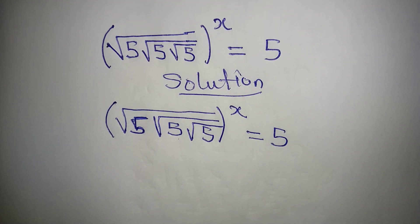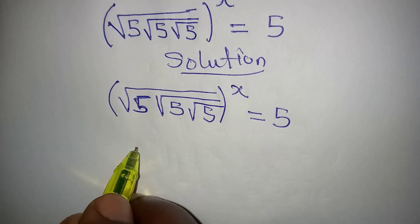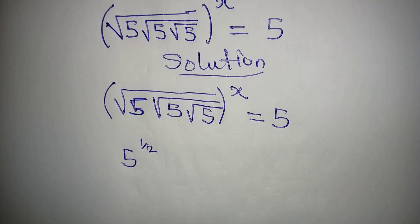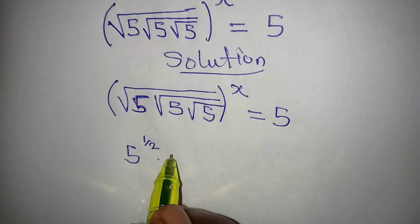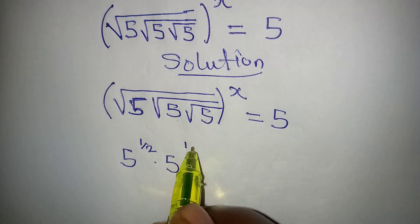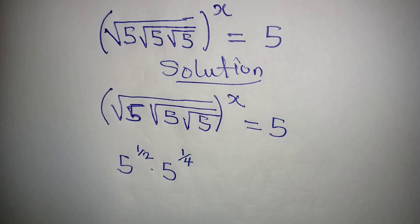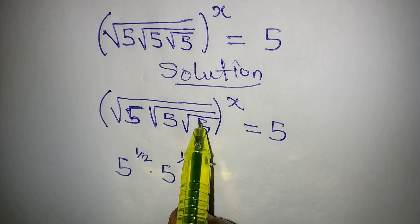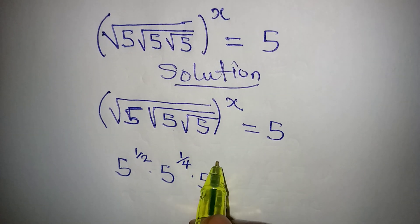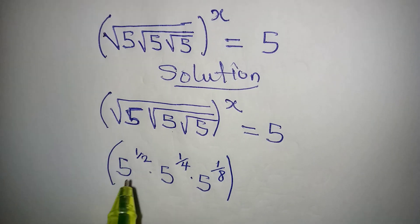Now to deal with this, let's work with what we have in the square root. We are having 5 to the power of 1 over 2 because the root is under 1 square root sign, multiplied by 5 to the power, this is under 2 square root signs so it should be 1 over 4, and then multiply by the next one is under 3 square root signs and it's going to be 5 to the power of 1 over 8.